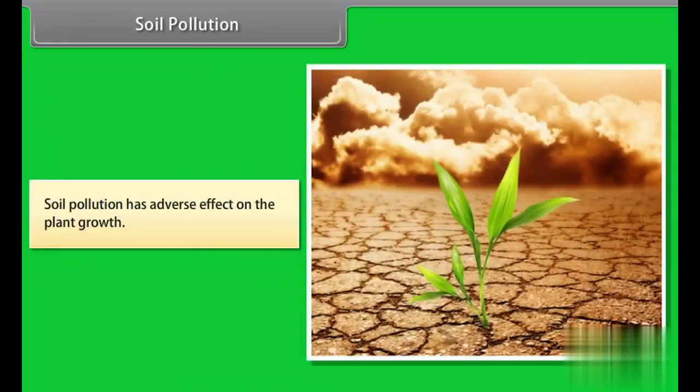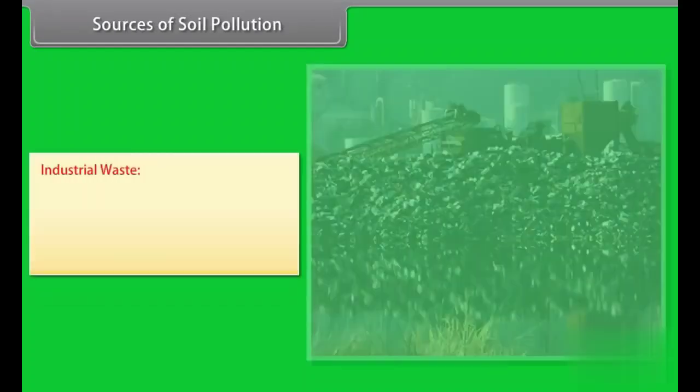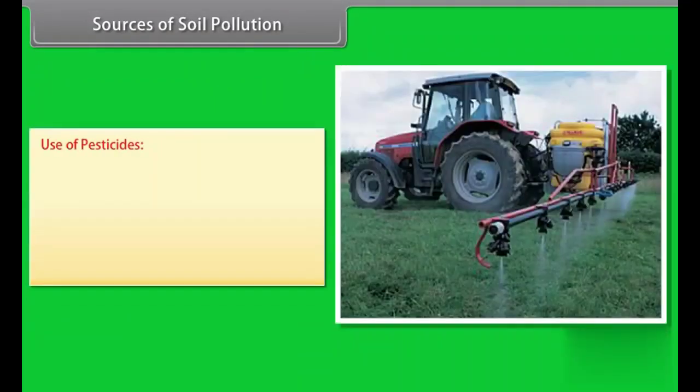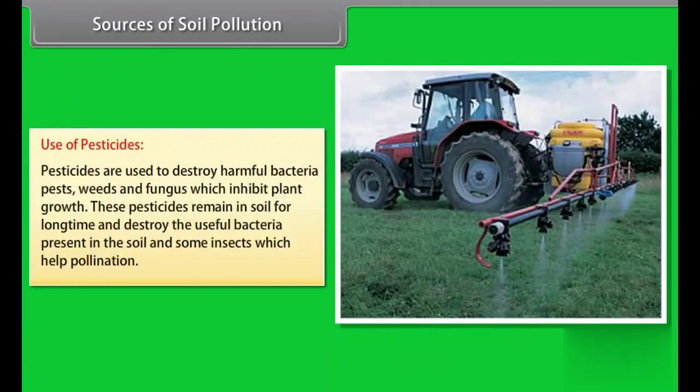Sources of soil pollution. Industrial waste: Waste from different industries and radioactive waste from thermonuclear power station pollutes soil with undesirable substances. Use of pesticides: Pesticides are used to destroy harmful bacteria, pests, weeds, and fungus which inhibit plant growth. These pesticides remain in soil for long time and destroy the useful bacteria present in the soil and some insects which help pollination.